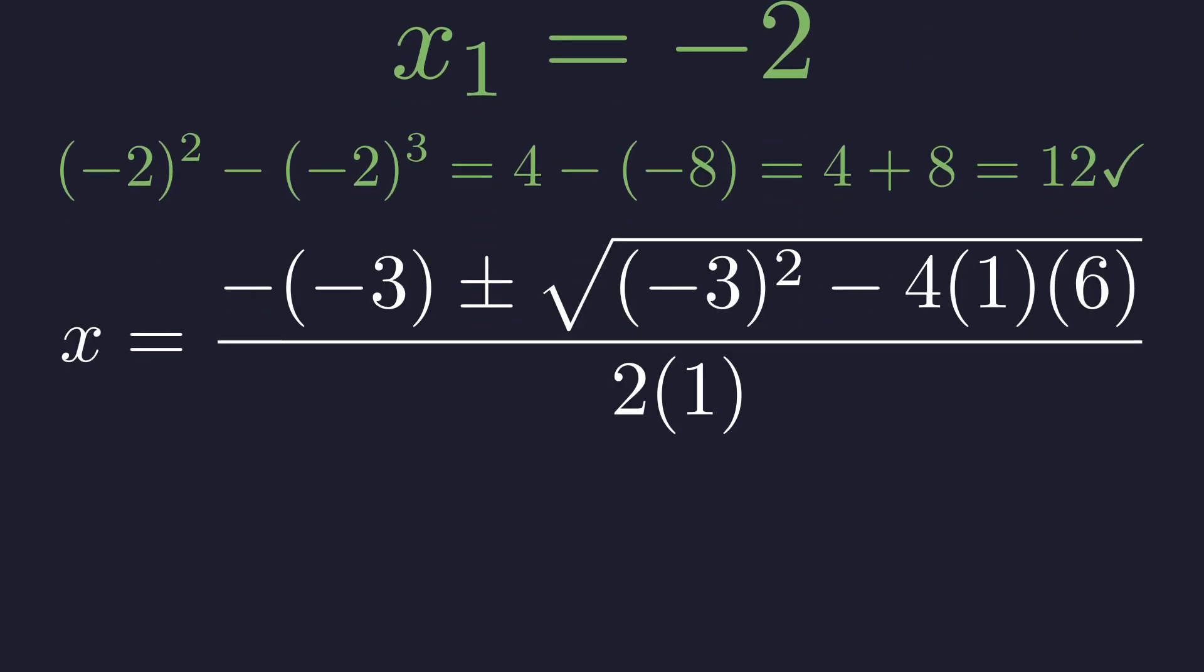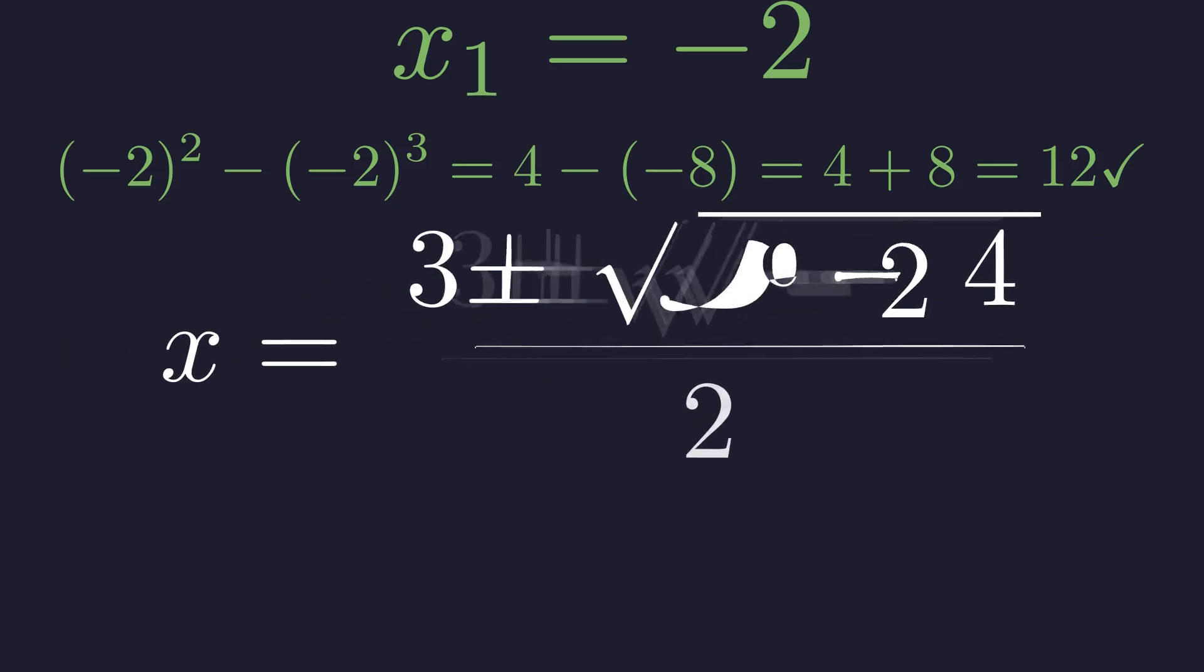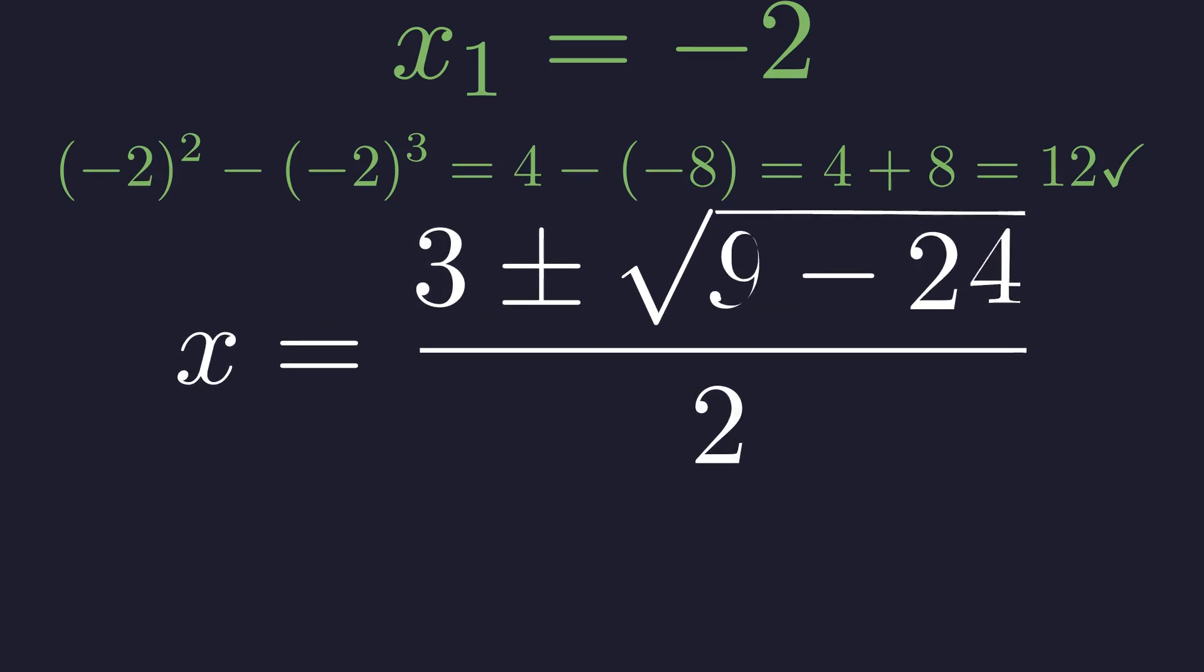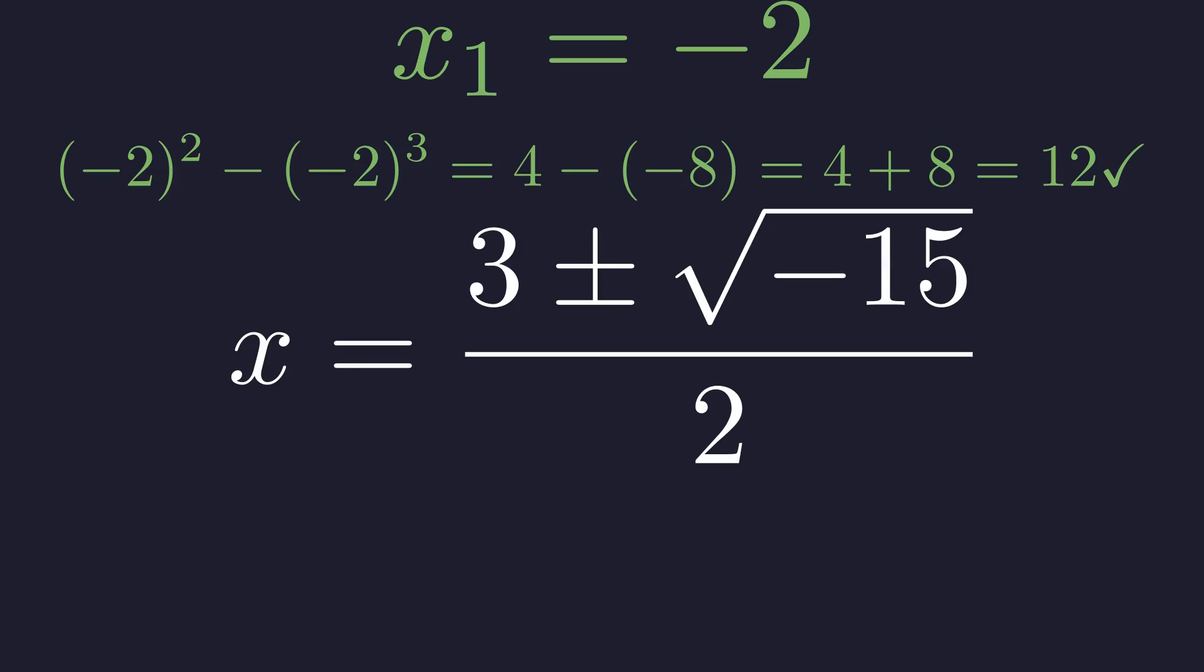For the second case, we use the quadratic formula. Simplifying step by step: 9 minus 24 gives us negative 15. The discriminant is negative 15. In the quadratic formula, a negative discriminant tells us there are no real solutions to this factor, only complex ones.